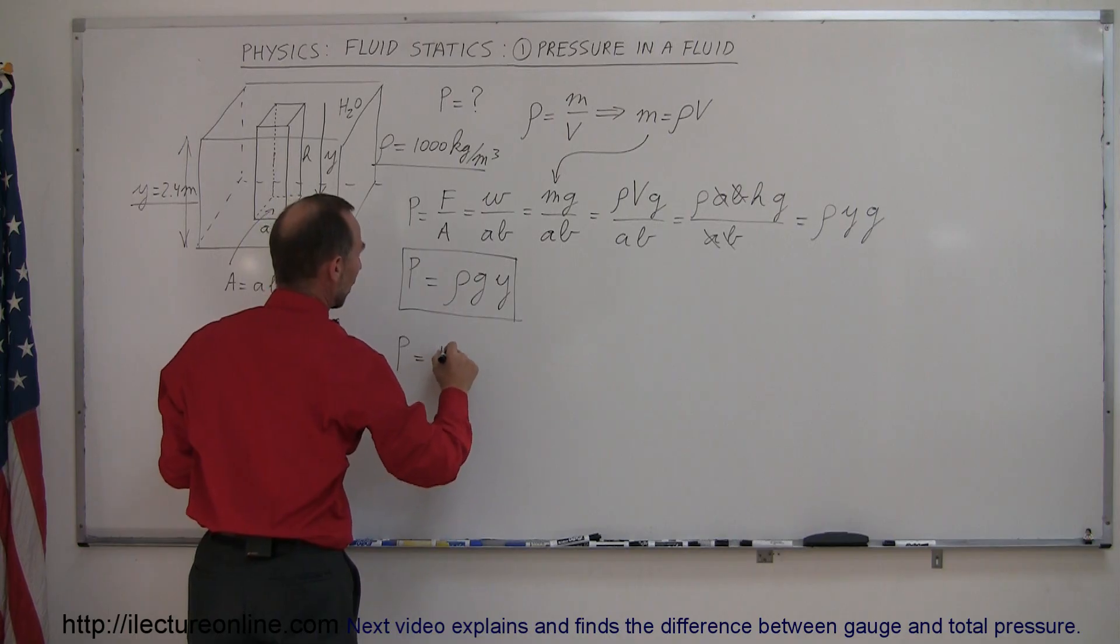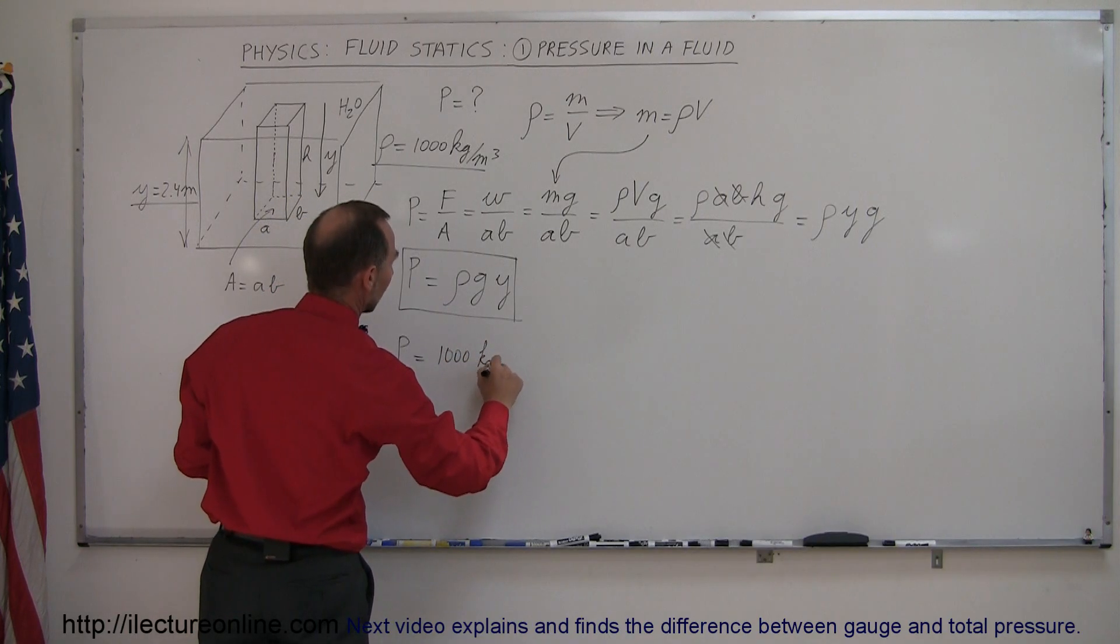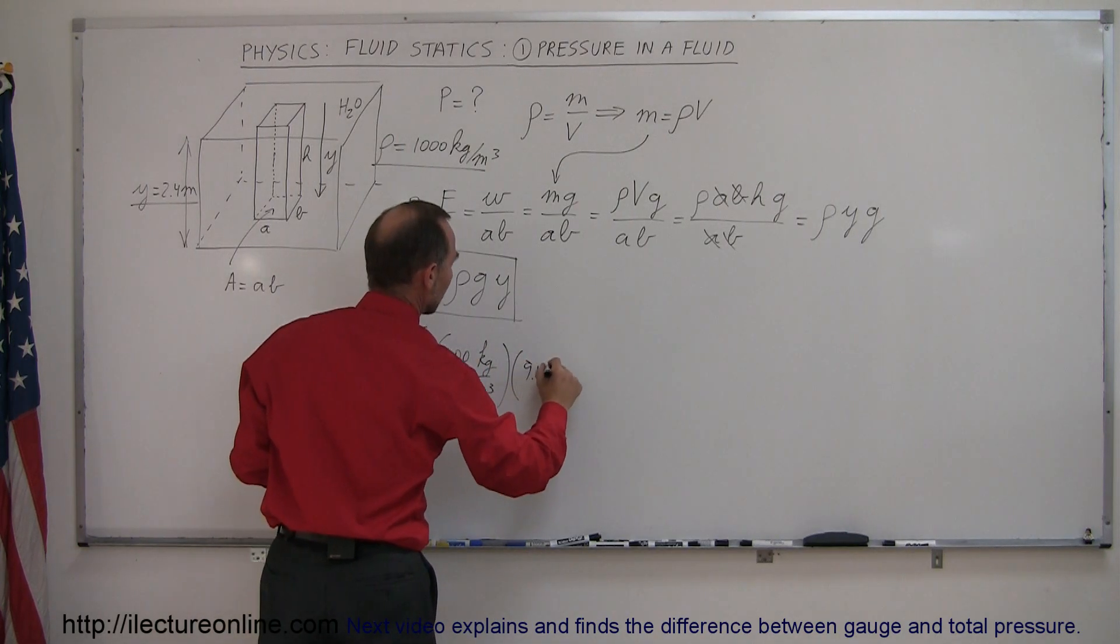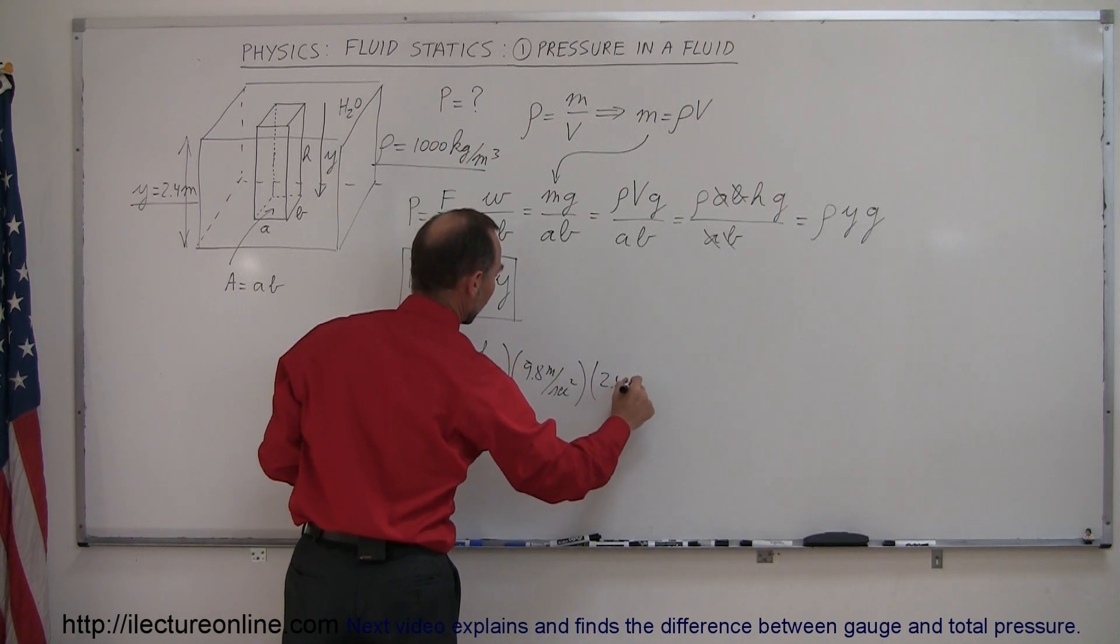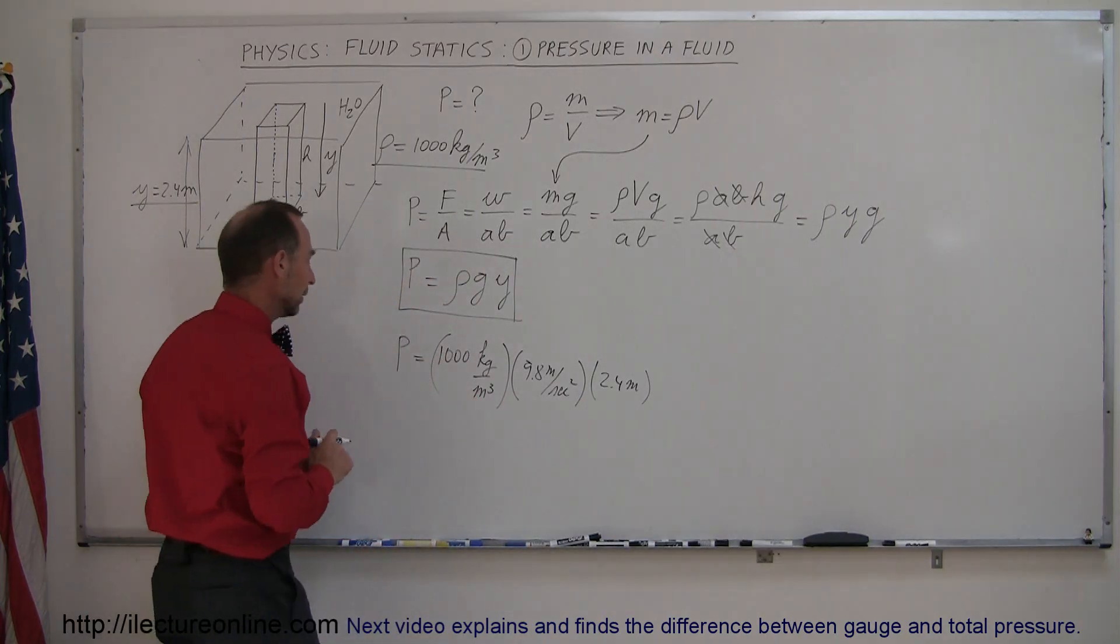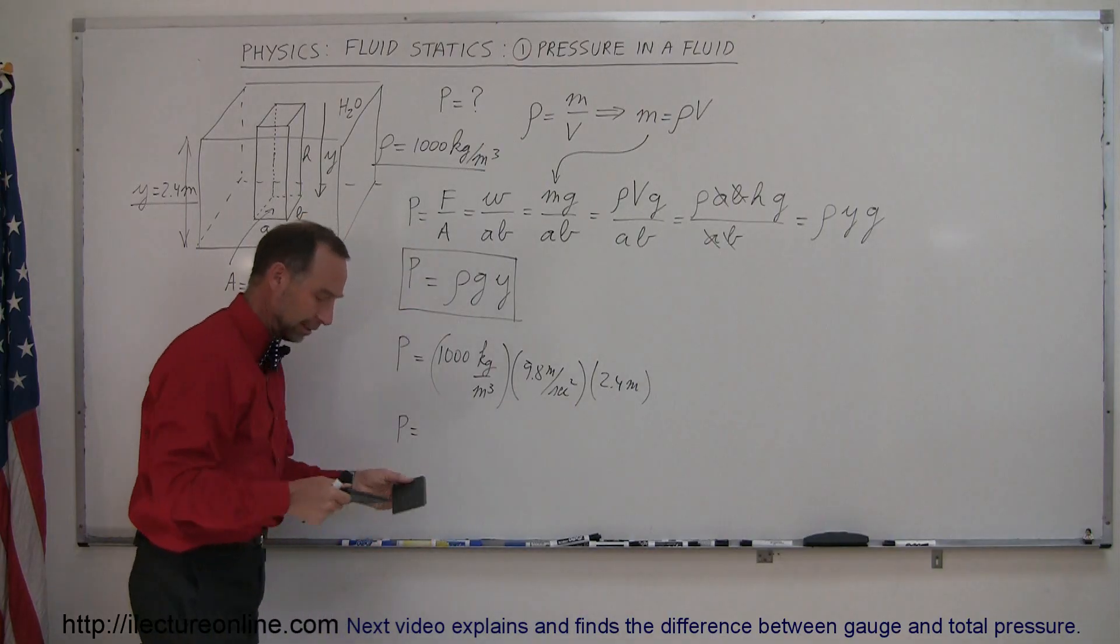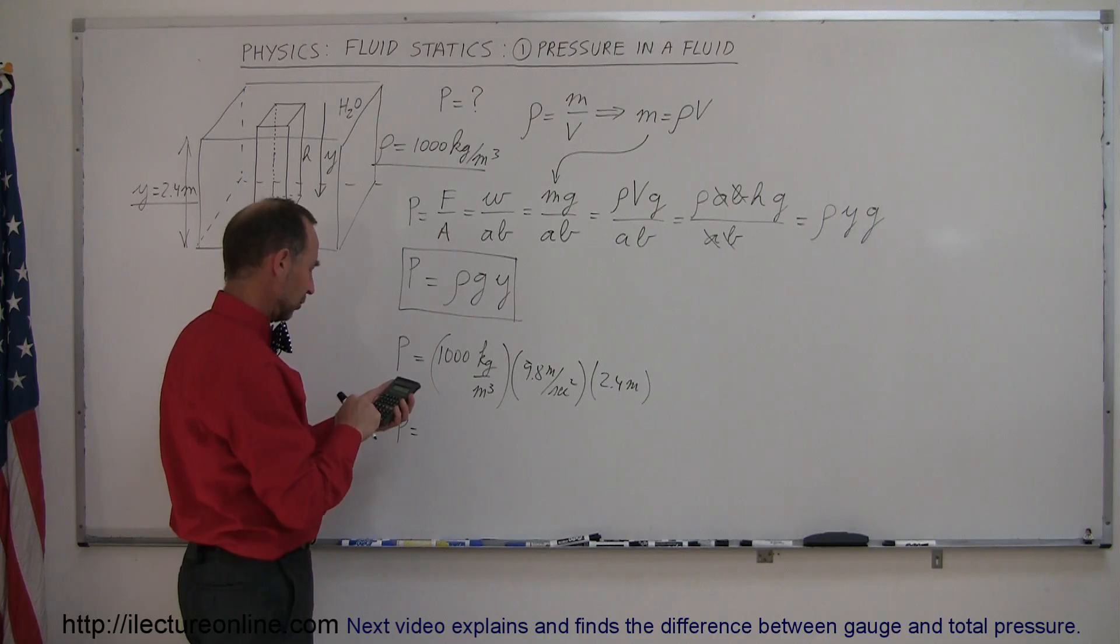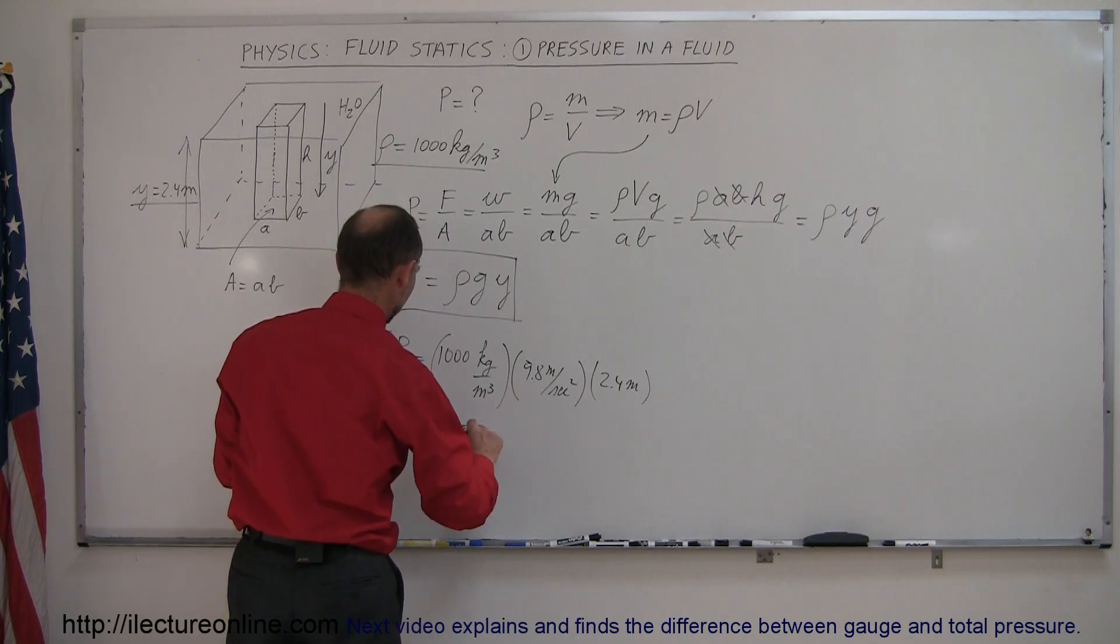that is equal to the density, 1,000 kilograms per cubic meter, multiply times G, which is 9.8 meters per second squared. Multiply that times Y, which is 2.4 meters. And notice then that the pressure is going to be, and let me grab my calculator,